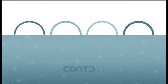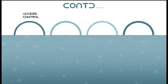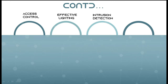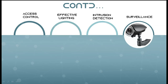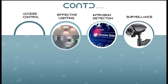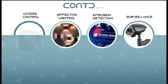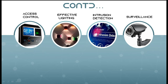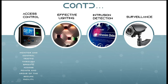Through access control we can restrict external persons or outsiders from entering the premises. Through effective lighting we can discourage someone who is planning a theft — if there is no lighting it becomes easy for them. Intrusion detection systems, usually placed at the perimeter walls, and surveillance systems covering both internal and external areas, are also key tools.